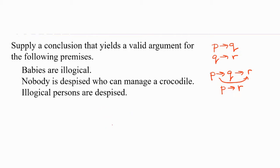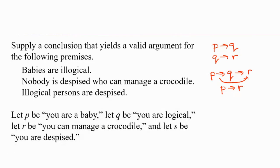So first, how can we rewrite babies are illogical as an if-then statement? Are we saying if someone is a baby, then they're an illogical person? Or if someone's an illogical person, then they're a baby? What is the implication here? The implication is if they're a baby, then they're illogical.